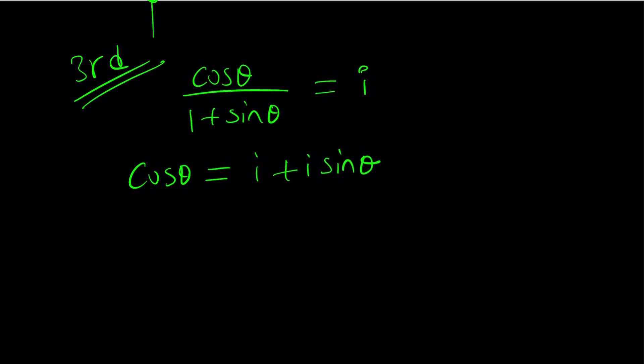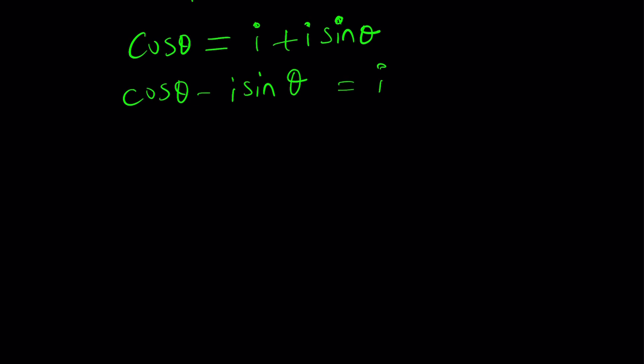That gives us cosine theta equals i plus i sine theta. That should be familiar to you. If you know Euler or Euler's formula, which is the most beautiful equation in math, you should definitely know this because Euler is the best. Cosine theta minus i sine theta equals i. What does the left-hand side look like? Well, Euler said if you have cosine theta plus i sine theta, it is equal to e to the power i theta. Such a beautiful equation. But we have a minus sign.